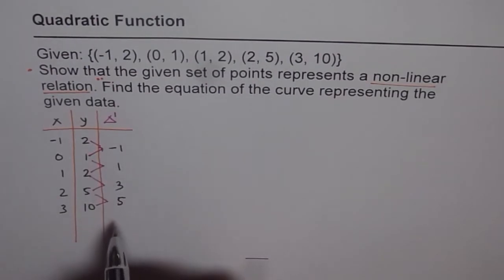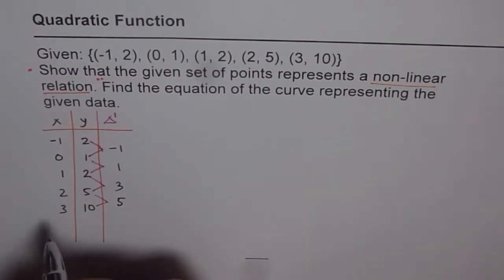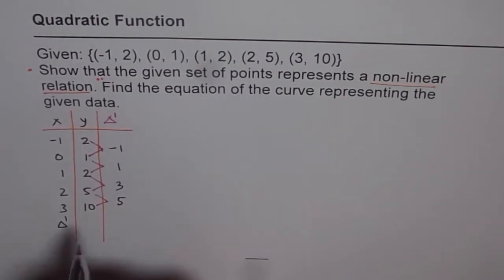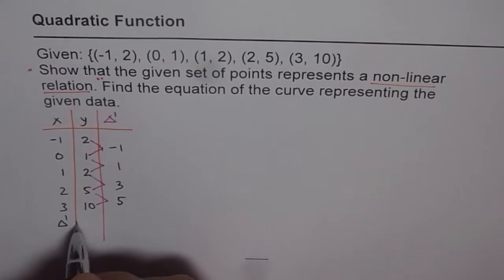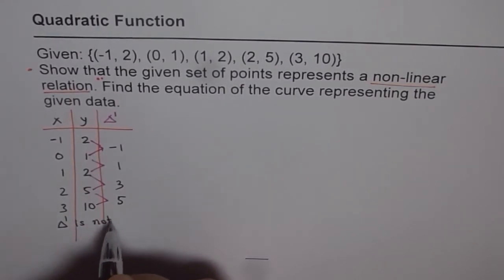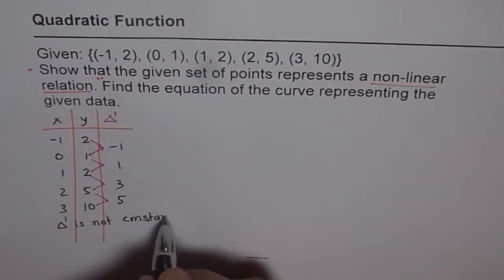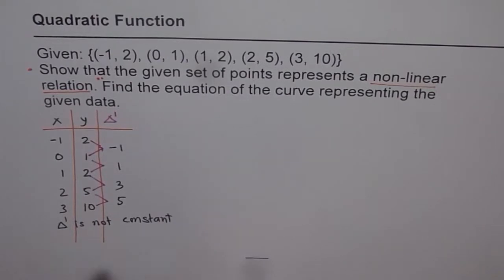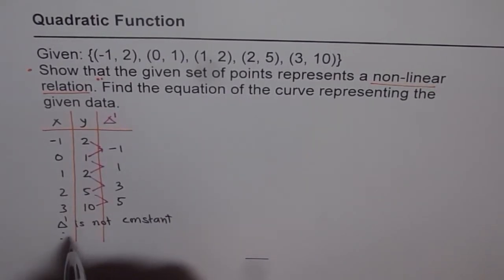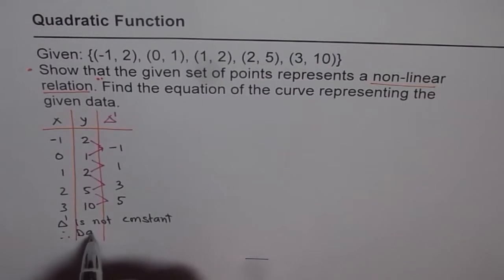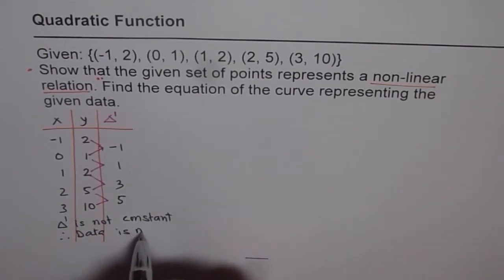Since the first finite difference is not constant — it gives us -1, 1, 3, and 5 — we say delta 1, the first finite difference, is not constant. Therefore, the data is non-linear.